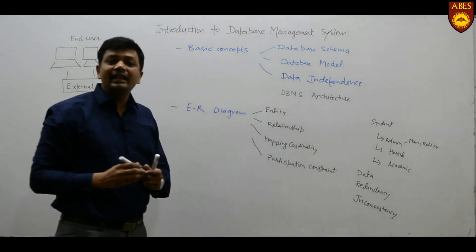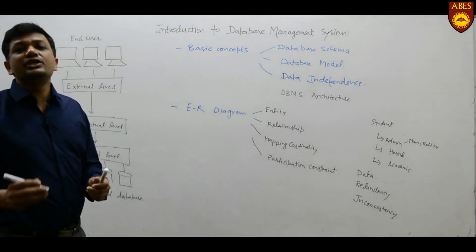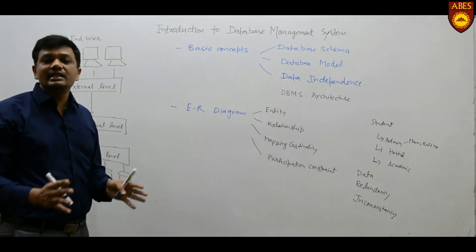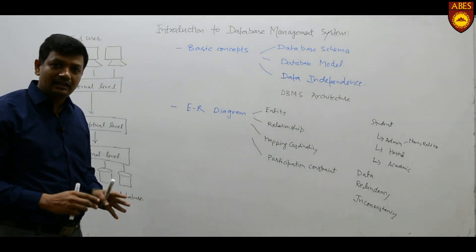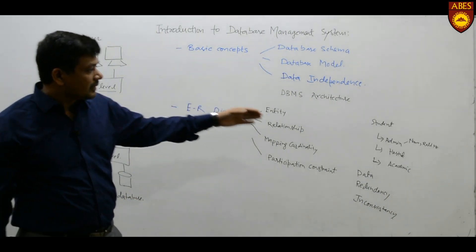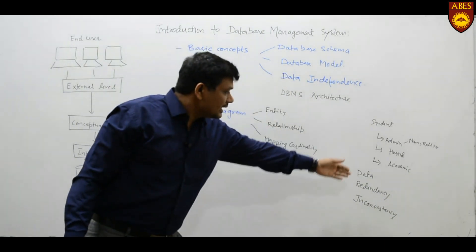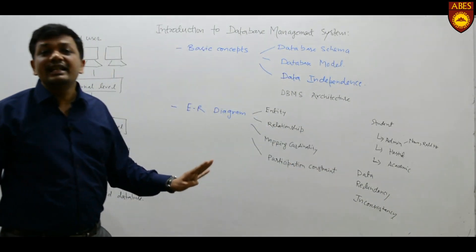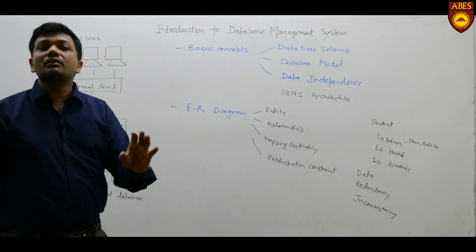When duplication of data exists, that is known as data redundancy. Due to data redundancy, when you try to update or manipulate values, you may forget to update some other places. This leads to another problem known as inconsistency. So data redundancy leads to inconsistency in the data — these are two major disadvantages of the file system approach.